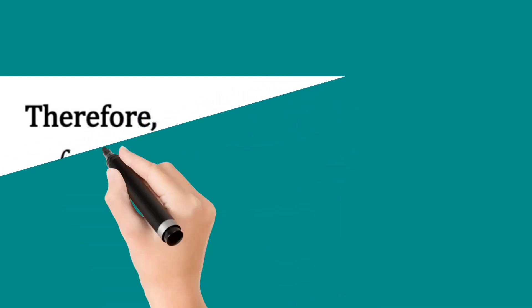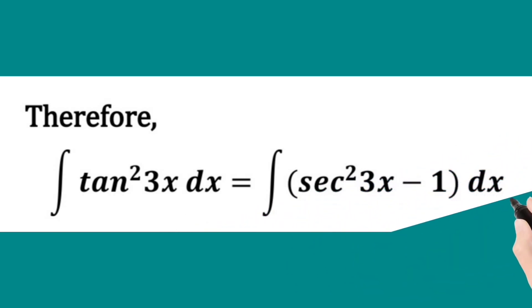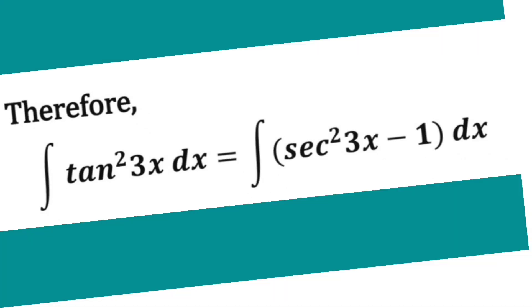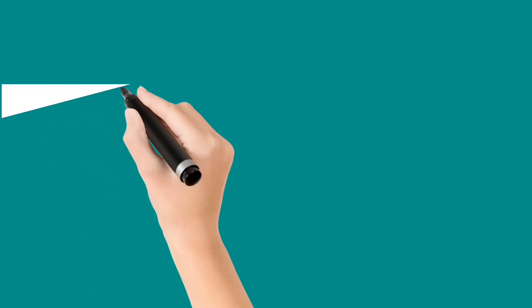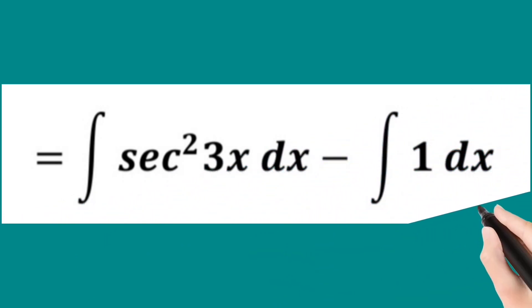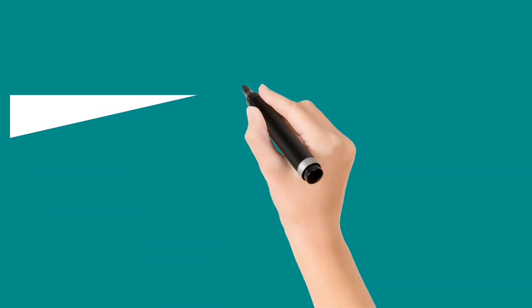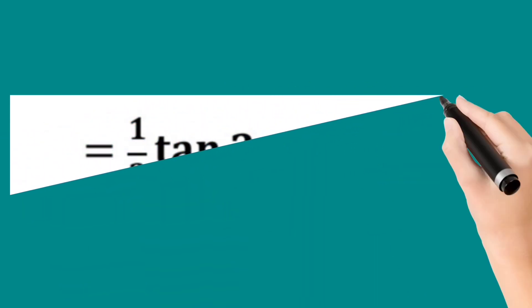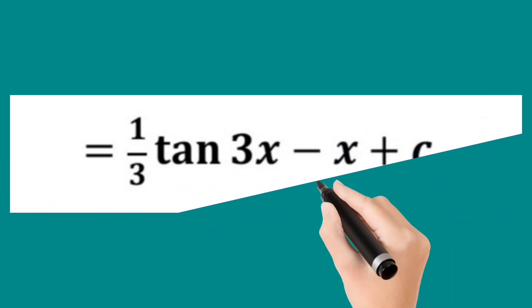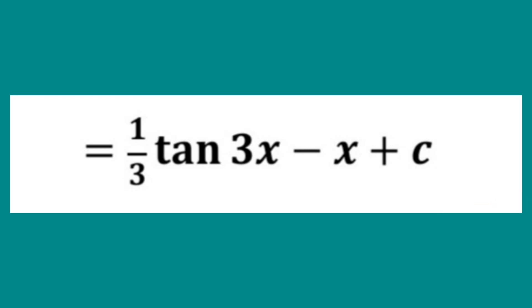Substituting into the given integral, the integral of tan square 3x dx becomes the integral of (sec square 3x minus 1) dx, which equals the integral of sec square 3x dx minus the integral of 1 dx. The integral of sec square 3x dx is (1/3) tan 3x, and the second integral is x. So the result is (1/3) tan 3x minus x plus the constant of integration c.